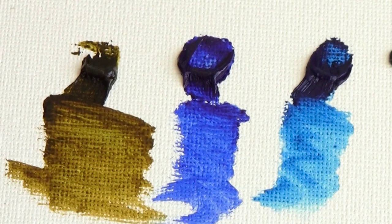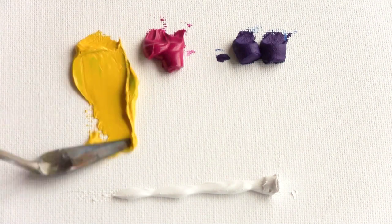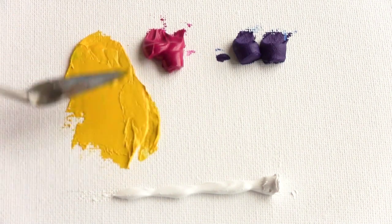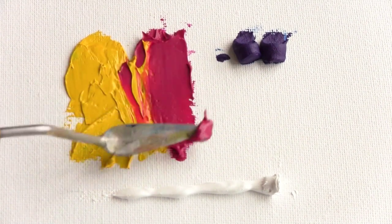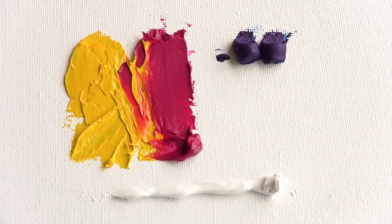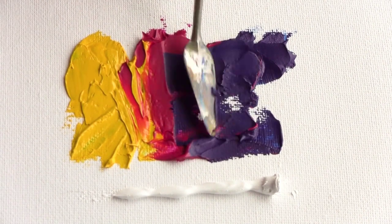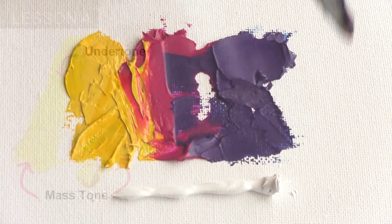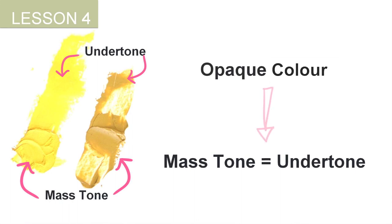For opaque colors that would be a little bit different. Mass tone is the color you see when the paint is applied thickly or seen squeezed out on the palette. It is also known as body color, and you don't see the support showing through the paint. In oil paint, some colors such as cadmium yellow and yellow ochre have similar undertones and mass tones.